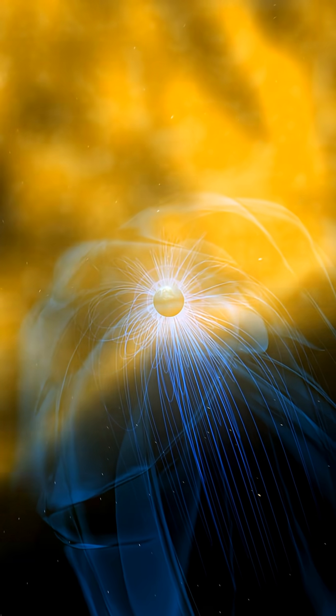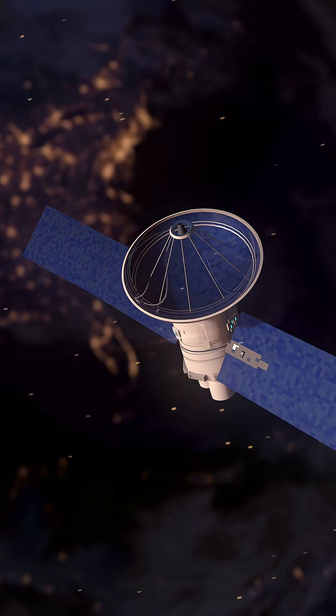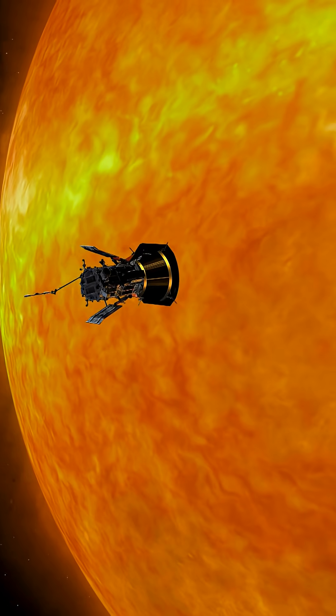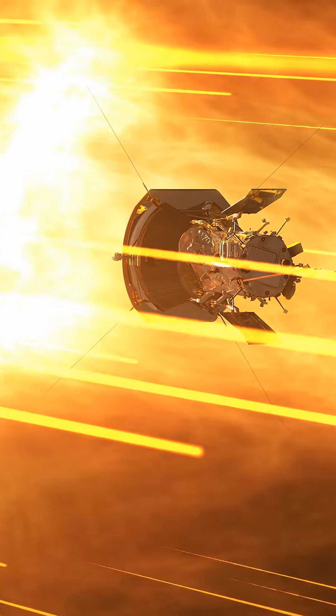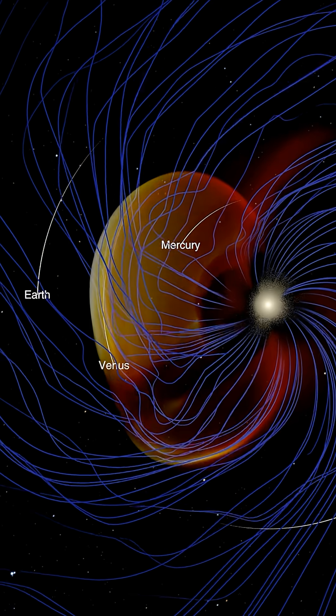That could mean the difference between a hit or miss at Earth or Mars, where solar eruptions can disrupt our satellites and communications. As Parker continues to fly around the sun, its observations will help scientists better understand the impact of space weather across our solar system.